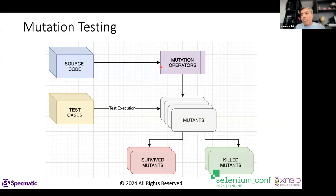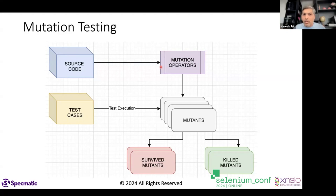Leadership eventually noticed: we've invested in unit tests, we have 80% coverage, but bug leakage is still very high — what's going wrong? Coverage just tells you what got covered, intentionally or accidentally. It tells you nothing about the quality of the tests. That's when mutation testing was introduced into many organizations.